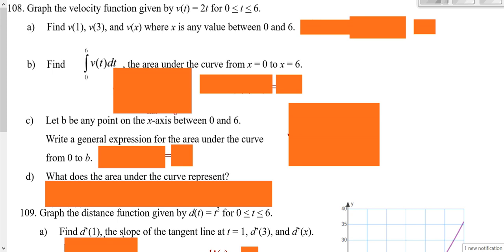We're going to look at 108 and 109. In 108, you're given your velocity is 2t. You're asked to find your velocity in part a when your time is 1, so you plug 1 in, so you'd have 2 times 1, so you get 2.